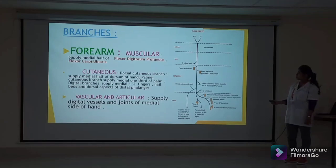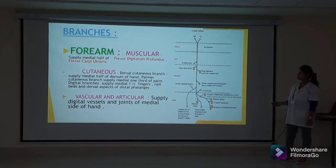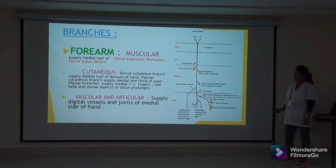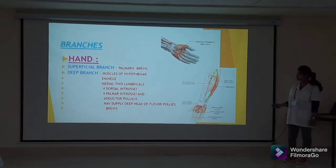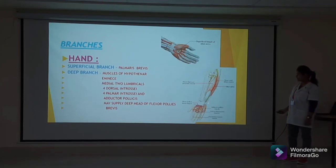Branches of the ulnar nerve in the forearm include: a muscular branch supplying the medial half of flexor digitorum profundus and flexor carpi ulnaris; a dorsal cutaneous branch supplying the medial half of the dorsum of the hand; a palmar cutaneous branch supplying the medial one-third of the palm; a digital branch supplying the medial one and a half fingers, nail bed, and dorsal aspect of the distal phalanges. In the hand, the deep branch supplies the muscles of hypothenar eminence, medial two lumbricals, four dorsal interossei, four palmar interossei, the lateral two lumbricals, and may supply the deep head of flexor pollicis brevis.